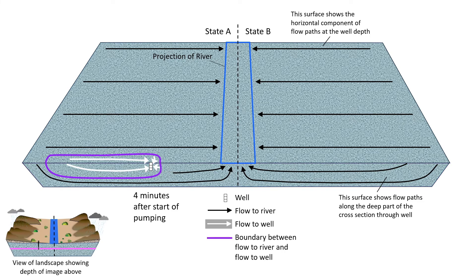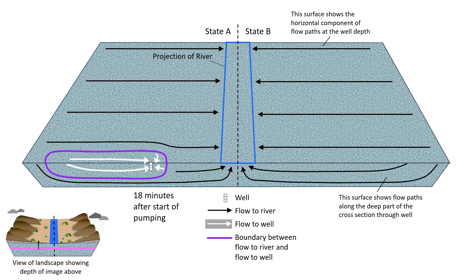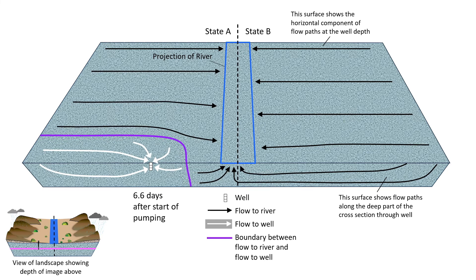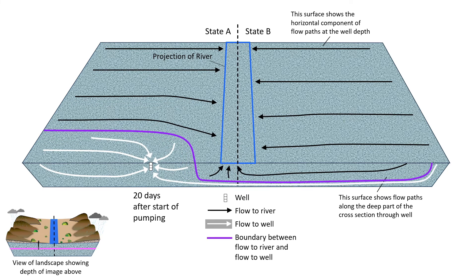We will again view changes with time due to pumping. This view emphasizes the three-dimensional nature of the flow, showing flow paths and the purple boundary on the horizontal surface within the aquifer, as well as along the cross section. As pumping continues, you will see groundwater in larger and larger volumes enclosed by the purple boundary flow towards the well. Note that in other aquifers, the changes with time could occur much faster or much slower than shown here. At about 20 days, deep groundwater in state B begins to migrate towards the well.